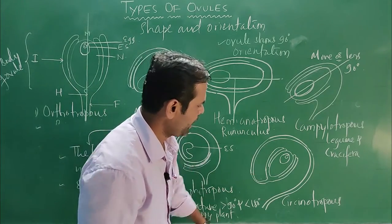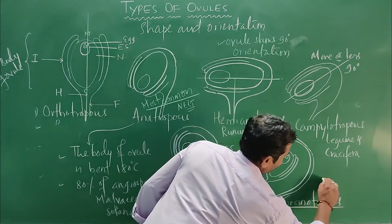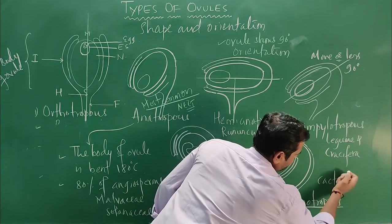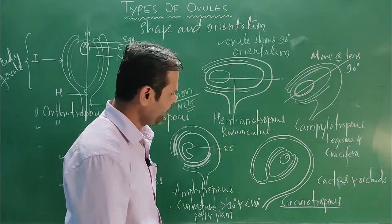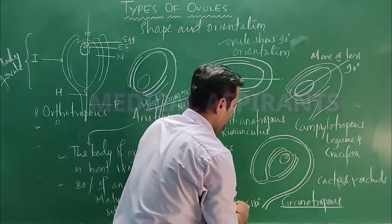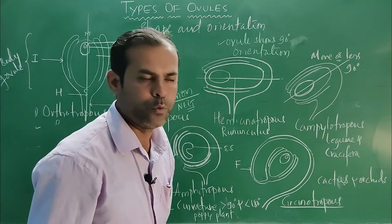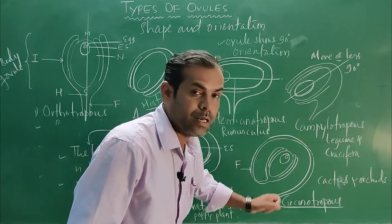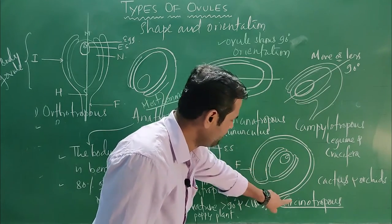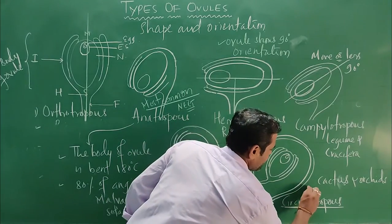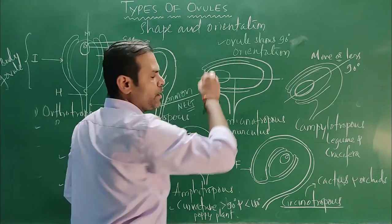The sixth and last type is the circinotropous ovule, found in cactus and orchids. Here, the ovule is completely surrounded by the funicle — the funicle is coiled around the ovule. These are the six types of ovule depending on shape and orientation.